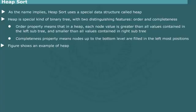The Completeness property means that all nodes of the tree up to the bottom level are filled. The bottom level is filled from left to right.